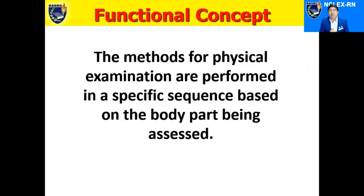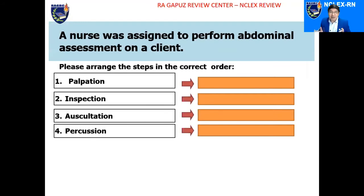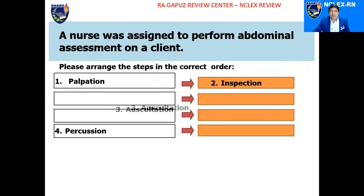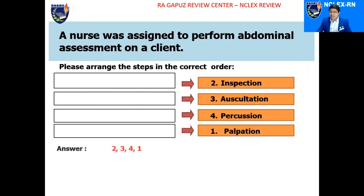So if you are given a drag-and-drop item related to abdominal assessment, remember the sequence: inspection, then auscultation, then percussion, and finally palpation. Why is palpation performed last? In order to prevent disrupting abdominal sounds — if you palpate first, you might disturb the abdominal organs, creating abnormal sounds that could be perceived during auscultation. So it's better to do palpation last. That's easy to remember.